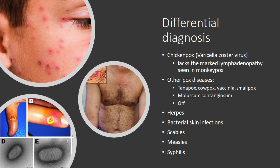The bottom left photo shows orf, which is classically transmitted from sheep, and you get it on fingers typically around lambing time. And then there are various other bacterial and viral infections that may be in the differential.